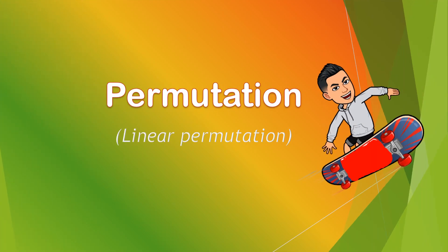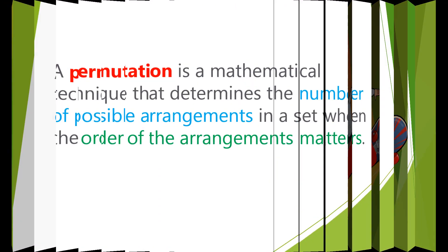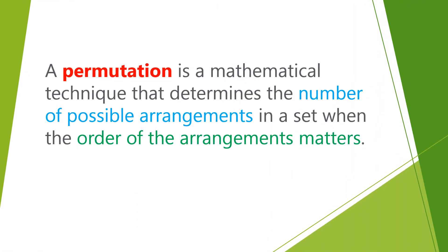Good day! Today we will be talking about permutation — basic permutation, or specifically linear permutation. First, what is permutation? Permutation is a mathematical technique that determines the number of possible arrangements in a set when the order of arrangement matters.